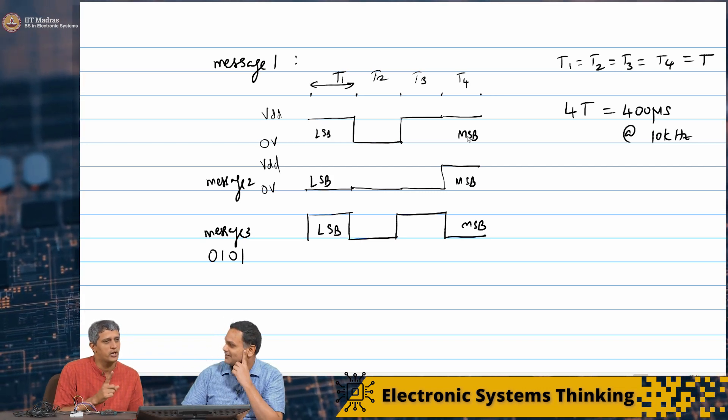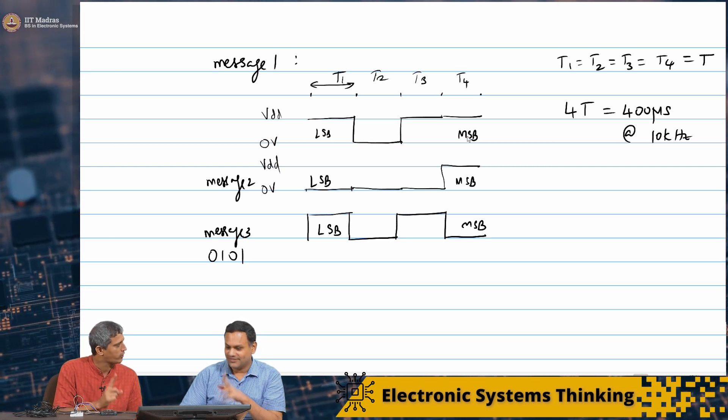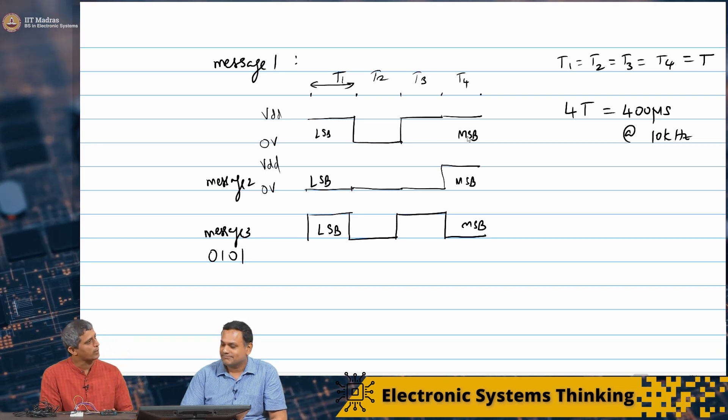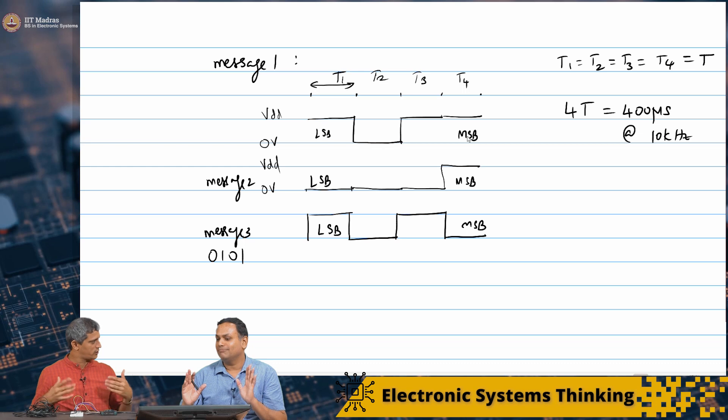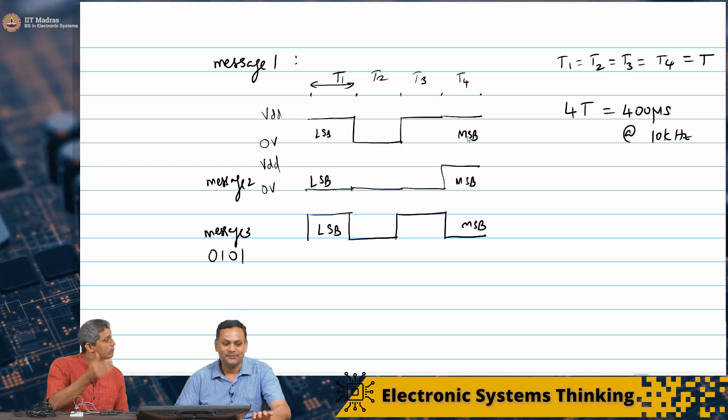You need to do it serially or maybe you can run 10 wires in parallel. So essentially you are saying that if I have a wired connection, it is a dedicated line for that particular message. That is right.